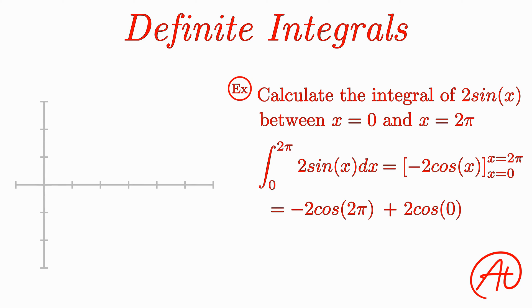Evaluating this, we know that both cos(2π) and cos(0) are equal to 1, which leaves us with -2 + 2, or 0 as our final answer.